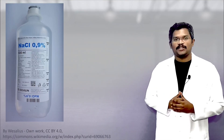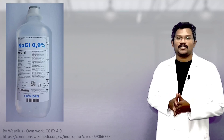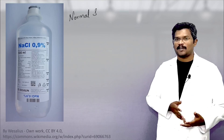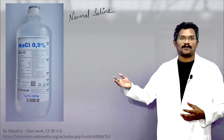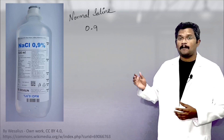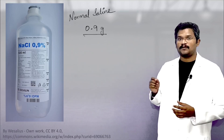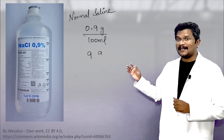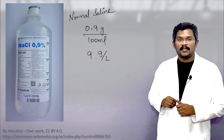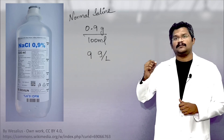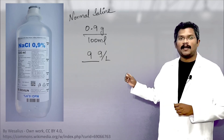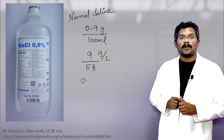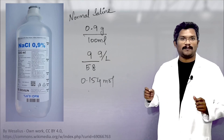This is 0.9% saline solution, which is extensively used in hospitals. It is referred to as physiological saline or normal saline because the osmolarity closely resembles that of body fluids. 0.9% refers to 0.9 grams of sodium chloride in 100 ml of water, or 9 grams in 1 liter. To convert this into moles, we divide by the molecular weight: 9 divided by 58 gives 0.154 moles, or 154 millimoles.